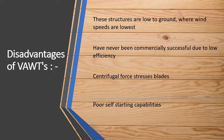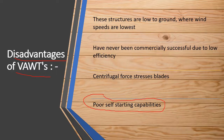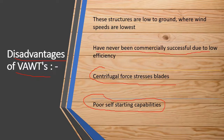Now the disadvantages of vertical axis wind turbines. The main disadvantage is poor self-starting capability, unlike horizontal axis wind turbines. Also, centrifugal force stresses the blades, which can damage parts of the turbine. They have never been commercially successful due to low efficiency. These structures sit close to the ground where wind speeds are lowest, so power input is low and hence power output is also low.